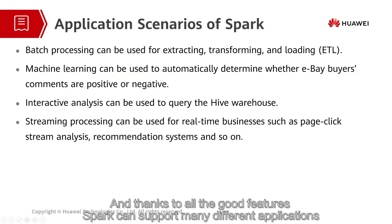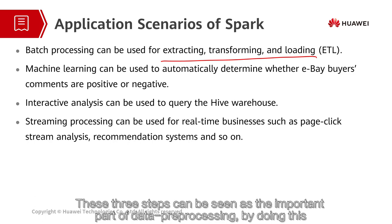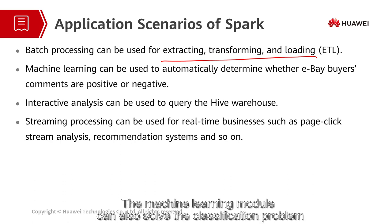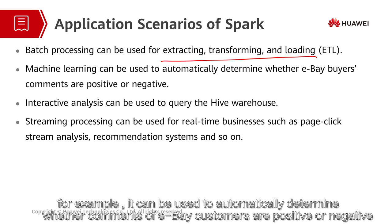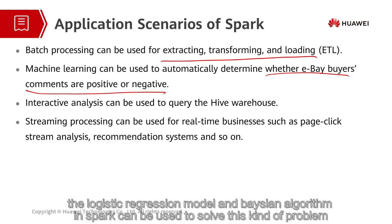Thanks to all the good features, Spark can support many different applications. For example, the batch processing module can be used for extracting, transforming, and loading, or ETL in short. These three steps can be seen as the important part of data processing. By doing this, we can improve the data quality and thus the efficiency of data analysis can be enhanced as well. The machine learning module can also solve the classification problem. For example, it can be used to automatically determine whether comments of eBay buyers are positive or negative. Actually, it is a typical binary classification problem.